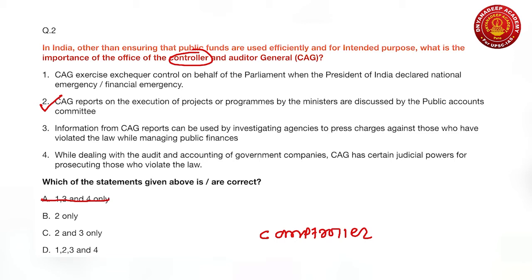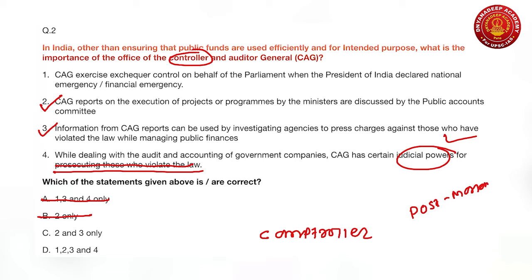The third statement says information from CAG reports can be used by investigative agencies to press charges against those who have violated the law while managing public funds — this is true, as CAG reports can be used as evidence, so option B is eliminated. The fourth statement claims CAG has certain judicial powers for prosecuting those who violate the law. While CAG has certain powers, it cannot prosecute a person because most CAG functions are post-mortem in nature. Fourth statement is wrong, so option D is eliminated. The correct answer is two and three.